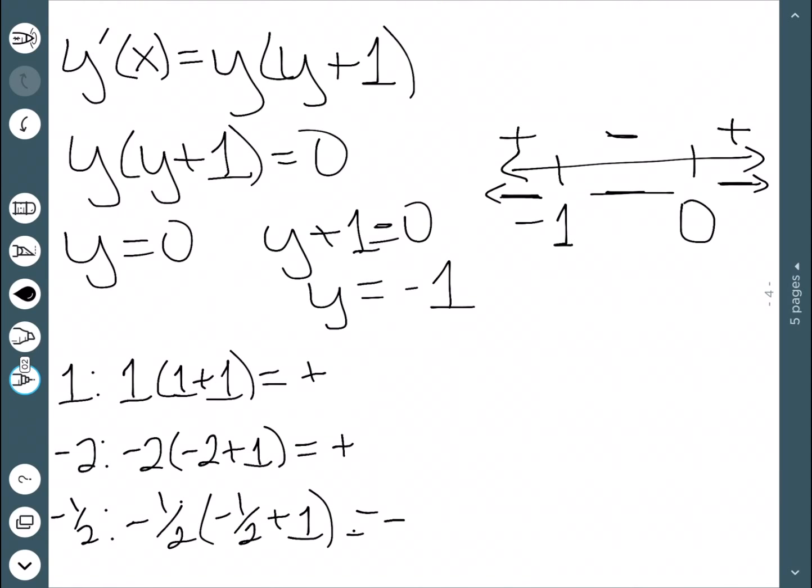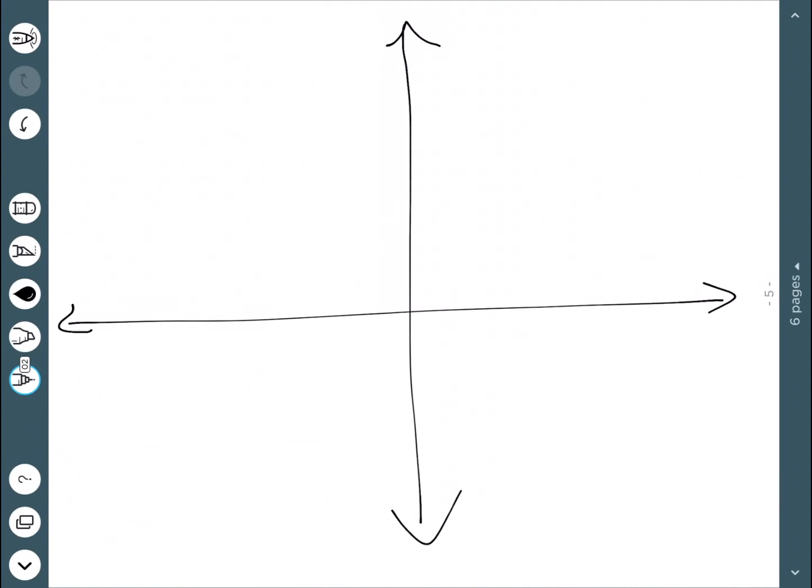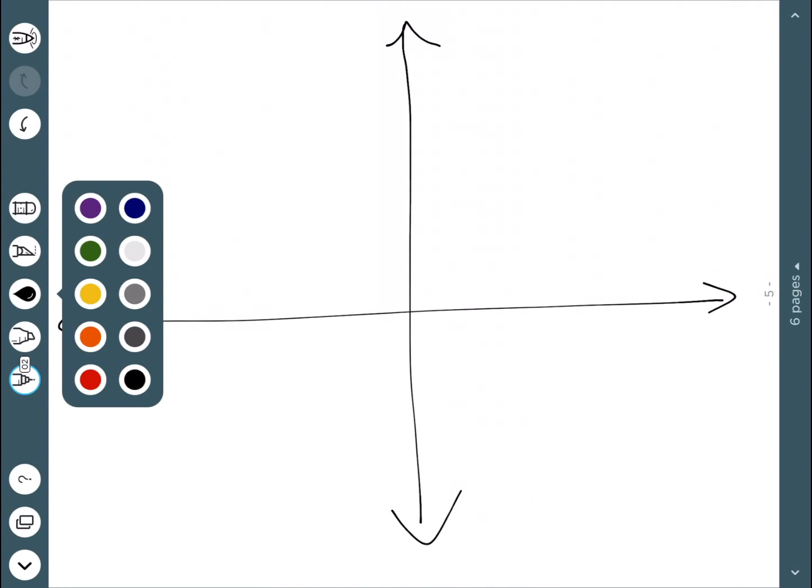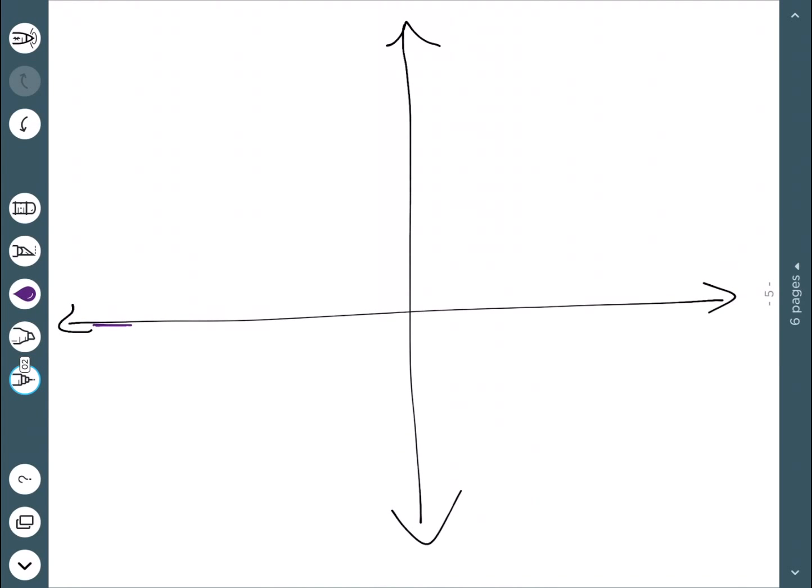So let's actually try to draw the picture. So here's my plane. We said that this thing was equal to 0 at y equal to 0. So when y is 0, we have flat lines. We also said that was true at y equal to negative 1. So at negative 1 we'll also have flat lines.